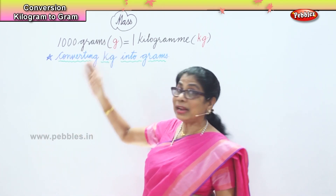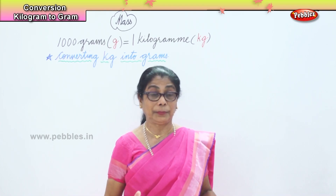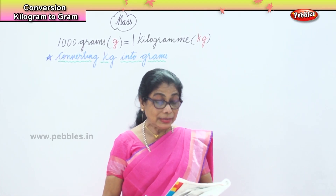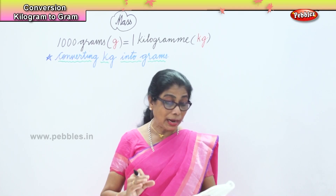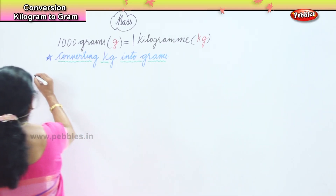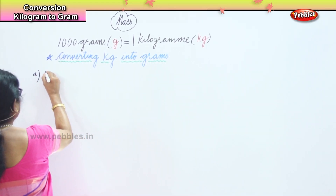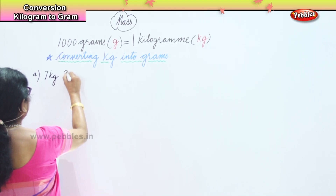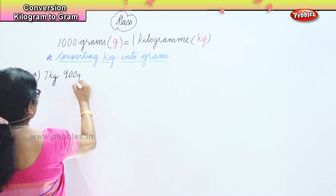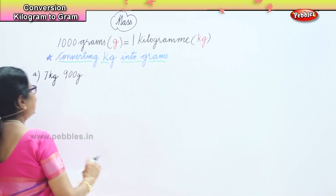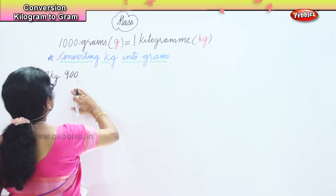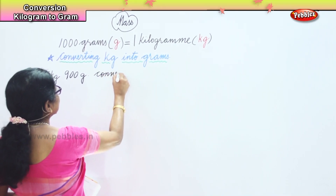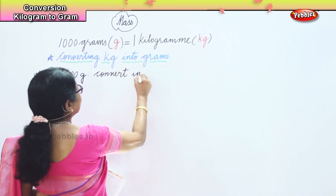And if you have extra grams, you add them on. The first sum we are going to work on is converting 7 kilograms and 900 grams into grams.